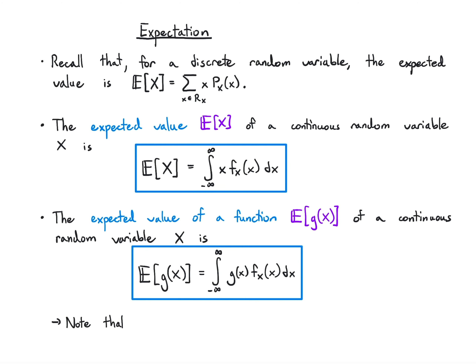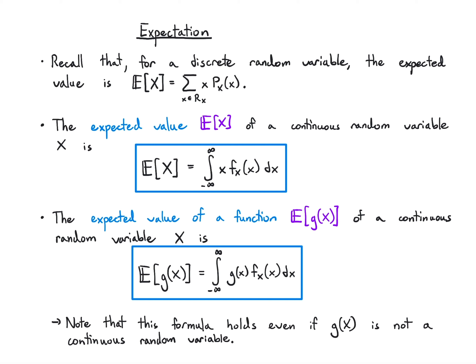This formula still holds even if g(x) is not a continuous random variable. For example, imagine taking a continuous random variable and discretizing it so it gives values that are either minus one or plus one — then it's no longer continuous, but this integral formula will still make sense. We'll see an example of that towards the end.